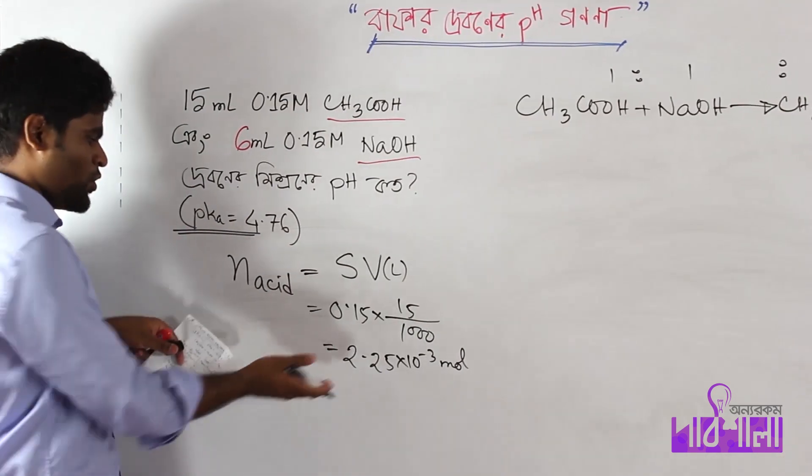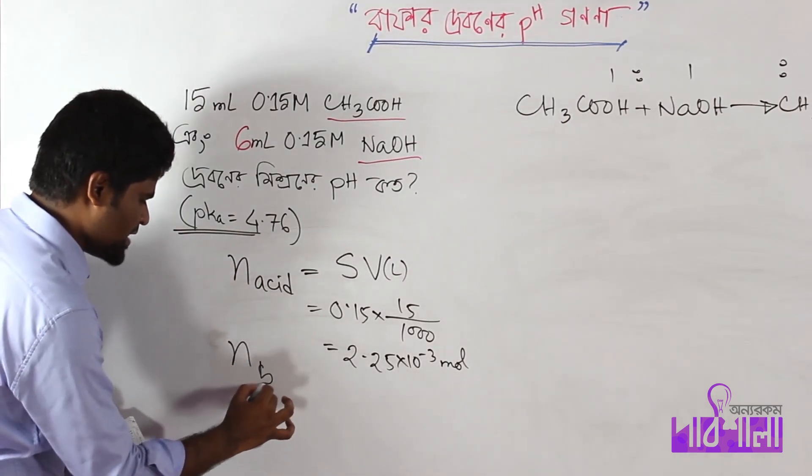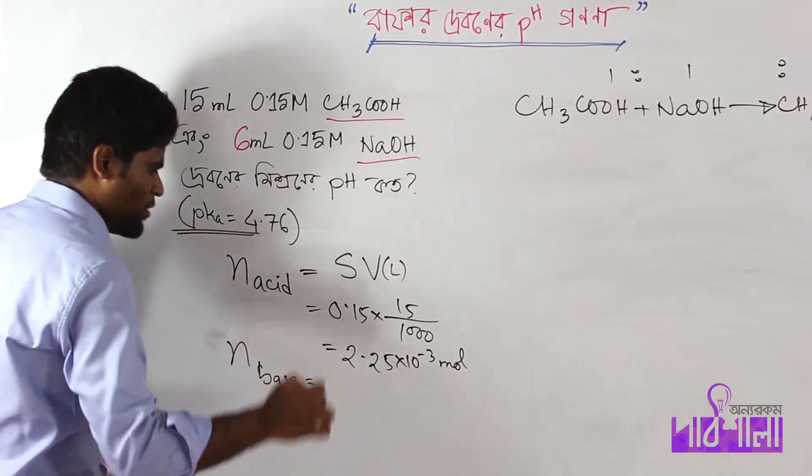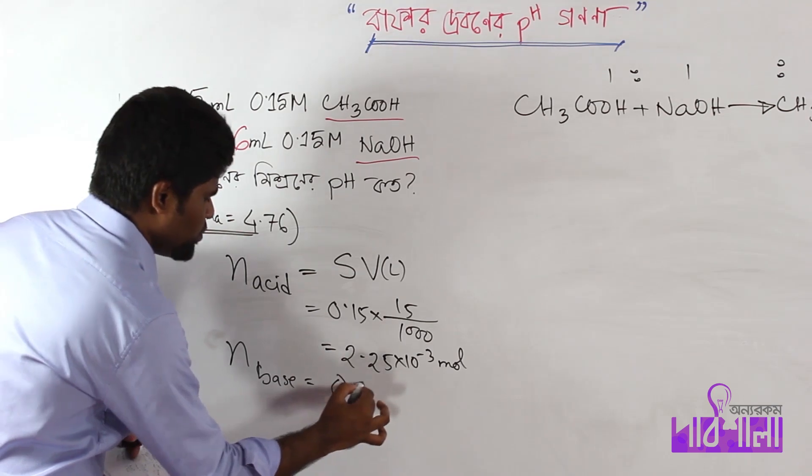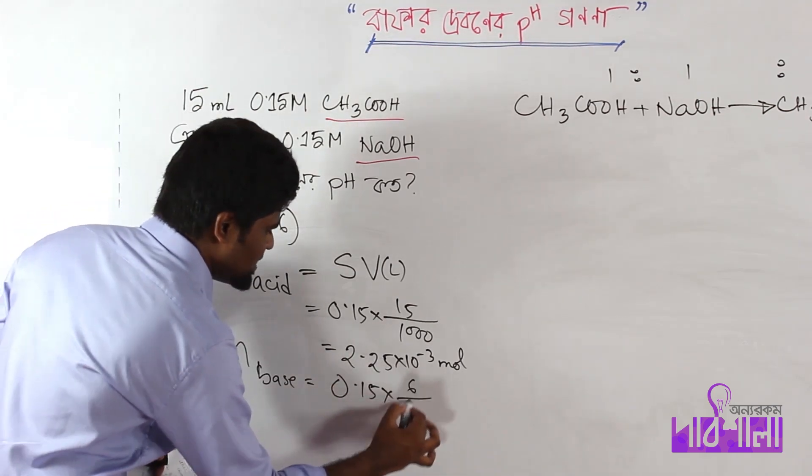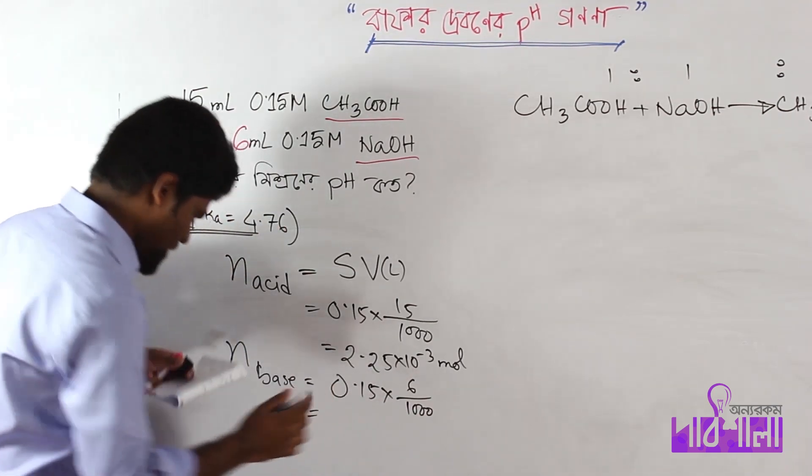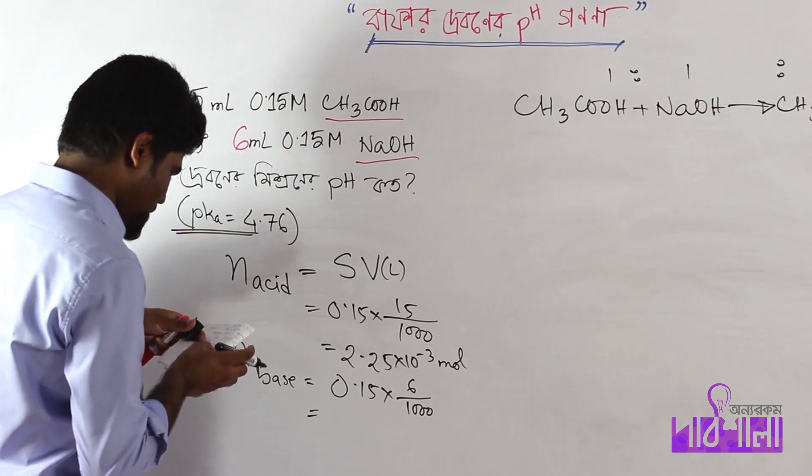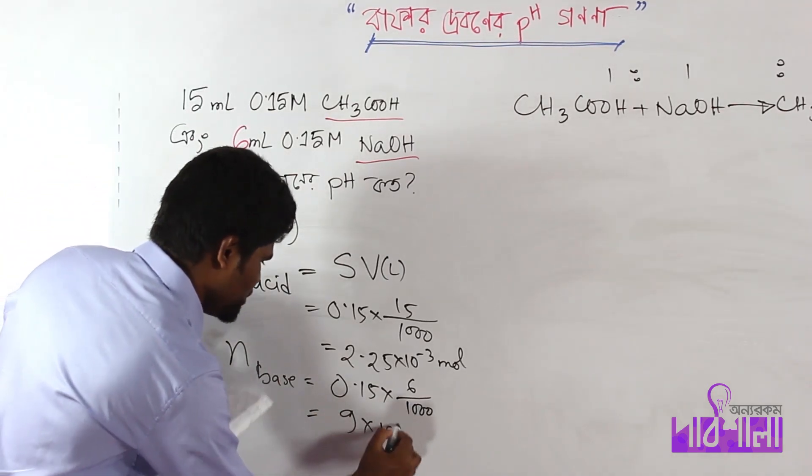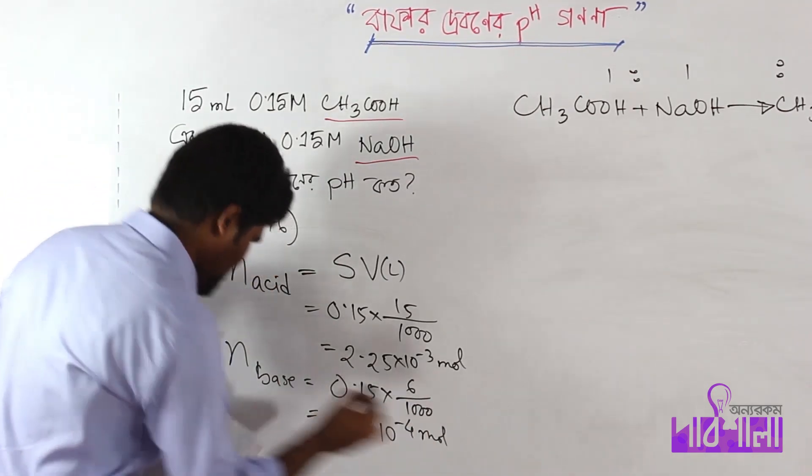This is n of base. This is 0.15 into 15 divided by 1000, so it equals 9 into 10 to the power of minus 4 mol.